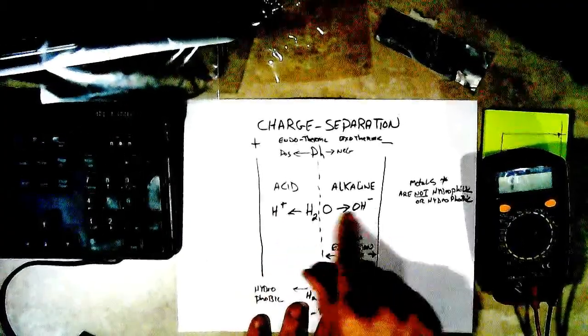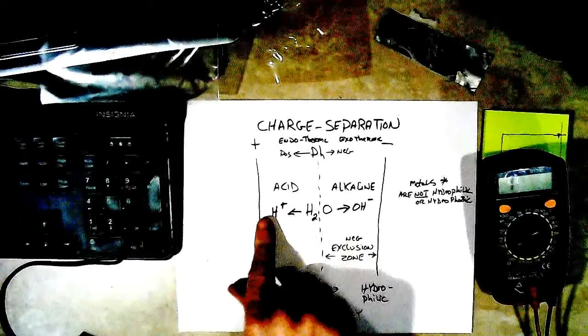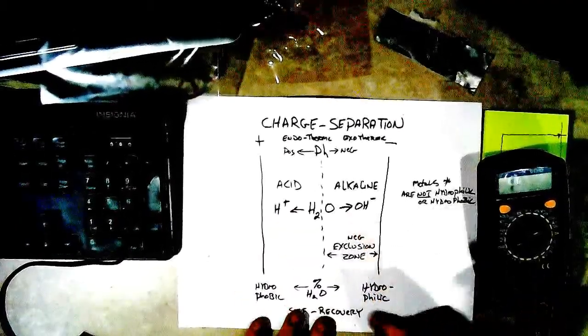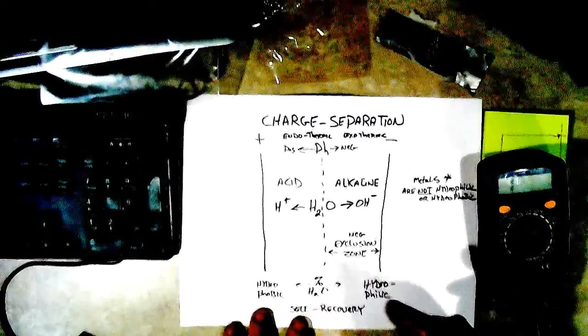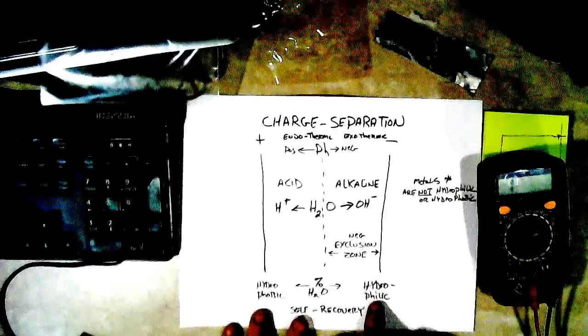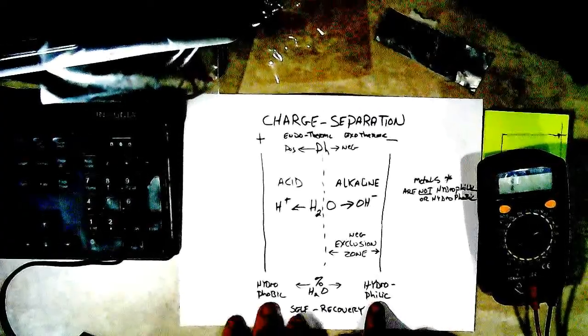So what you have is alkaline goes to neutral, and then it goes over to acid. So there's your pH. Now another factor that you need to consider, especially for a self-charging battery, is whether your electrodes are hydrophilic and hydrophobic.